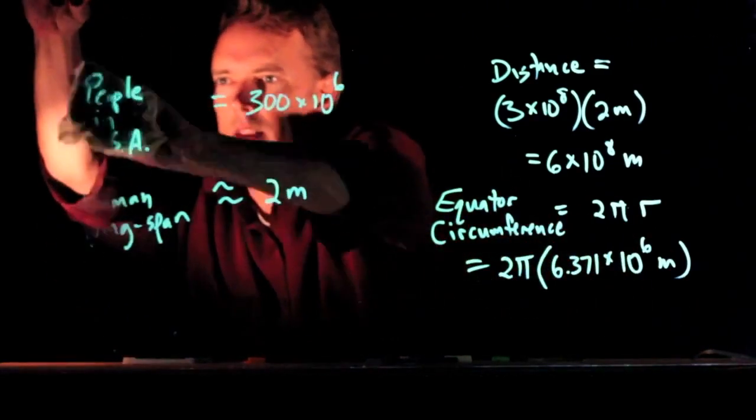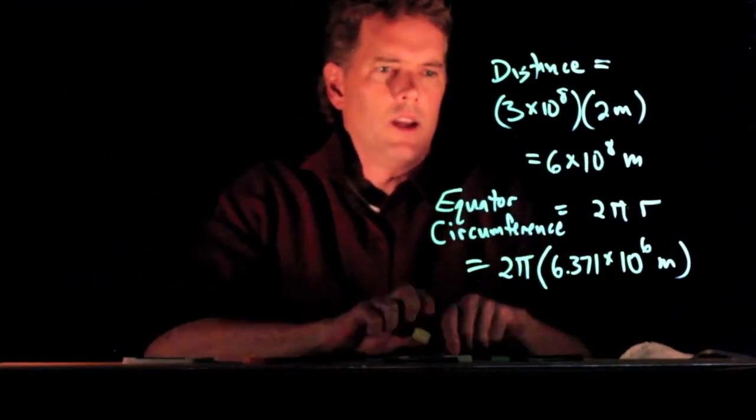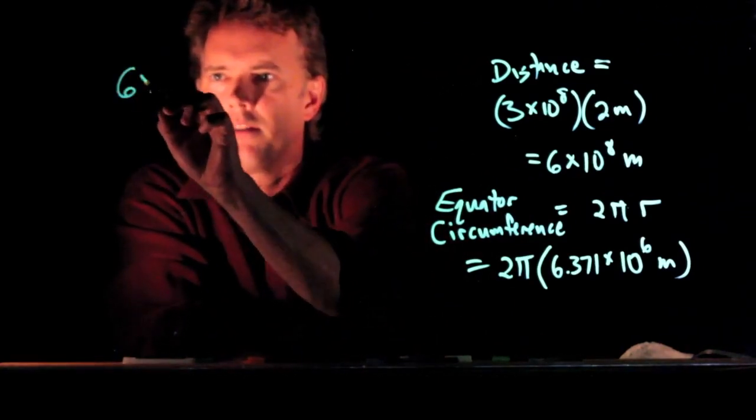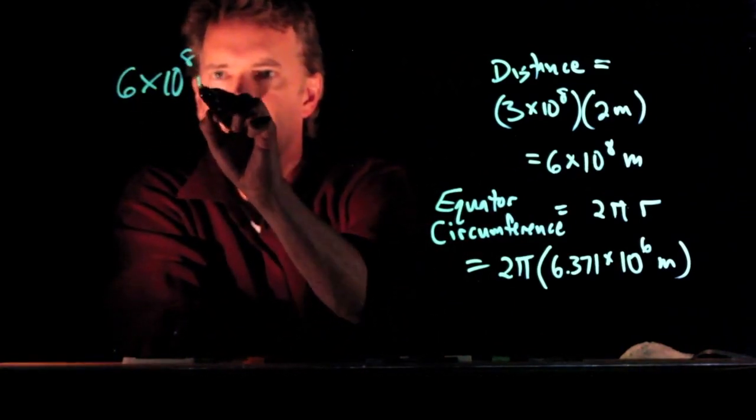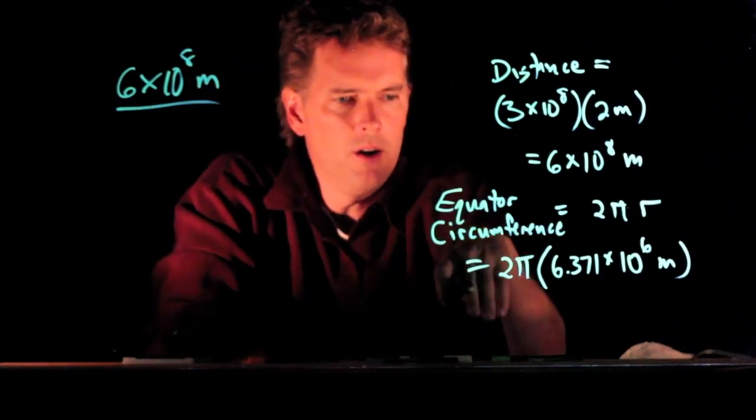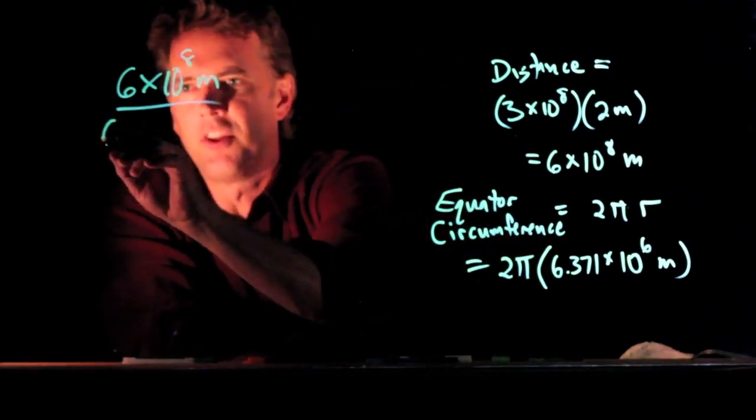All right, so let's make some room. And now if we want the total distance here, six times 10 to the eight, and we're going to divide by two pi r, let's approximate this up. What's two pi? Two pi is six.